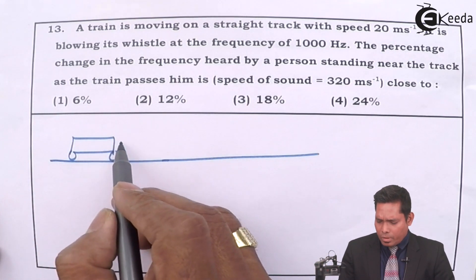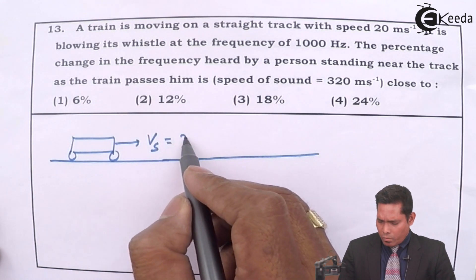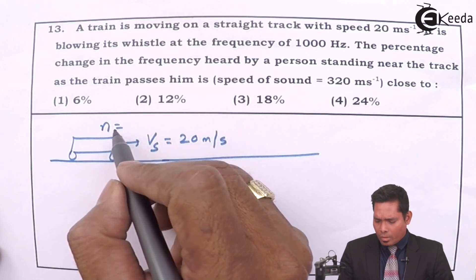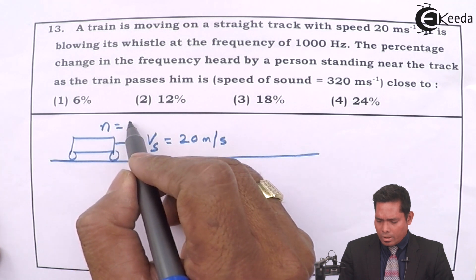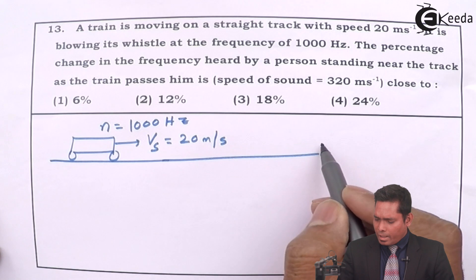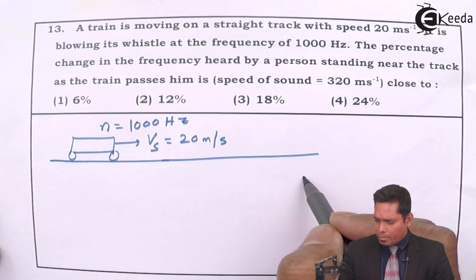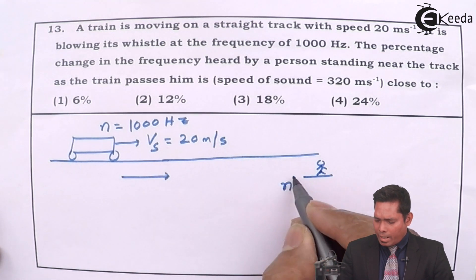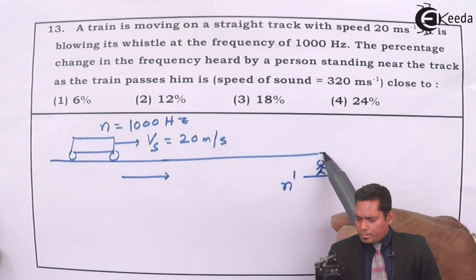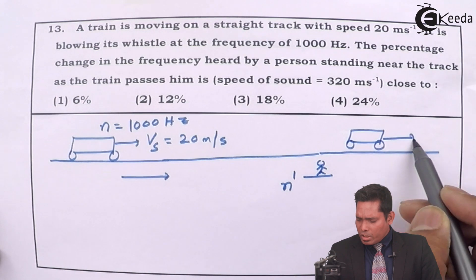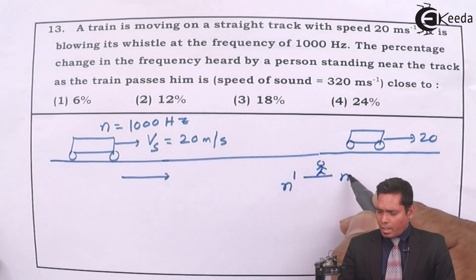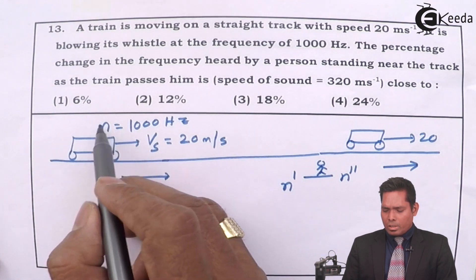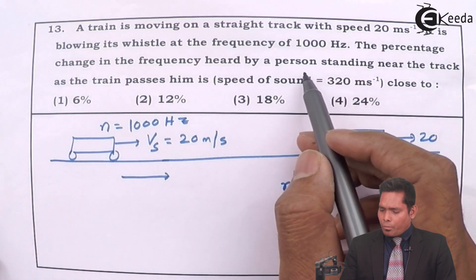This is the track on which the train is moving with a velocity of source, 20 meters per second. The actual frequency is 1000 Hz. The person is standing near the track. As the train approaches him, he will hear the frequency n-dash (apparent frequency while approaching). When the train recedes, moves away from him, he will hear the frequency n-double-dash. The approaching frequency is greater; the receding frequency will be smaller. The actual frequency is 1000 Hz. We use the formula to find the percentage change.